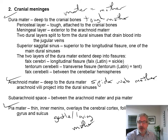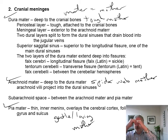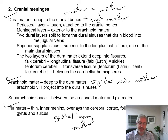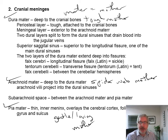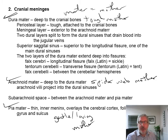The pia mater surrounds the brain, wraps around all the gyri, goes into the sulci, and just hugs the whole brain — it's very closely associated with the entire brain. The arachnoid mater is between the pia mater and the dura mater — deep to the dura mater and superficial to the pia mater. And the dura mater is on the outside — it's most superficial to the brain, deep to the cranial bones, but superficial to the arachnoid mater and pia mater.